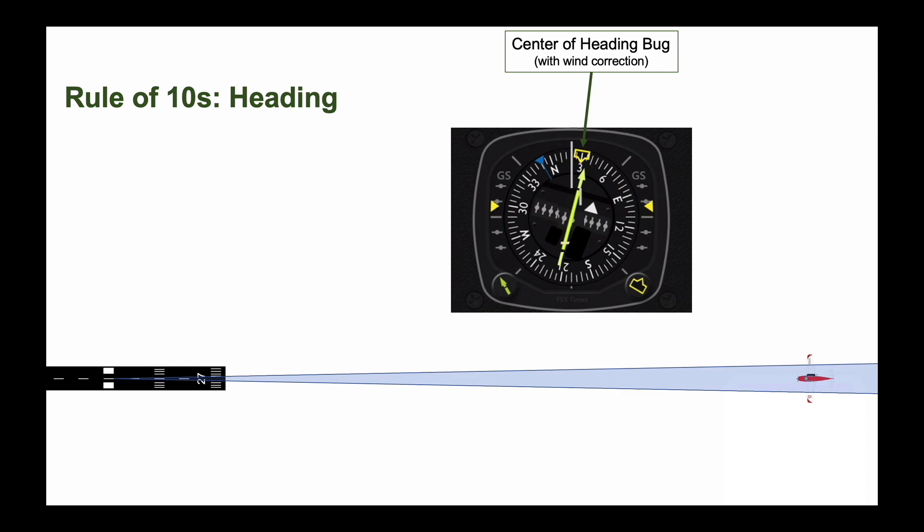If you drift to the right, you need to correct left. Without moving the heading bug, turn no farther than the heading under the left edge of the bug. Hold that heading until the course needle centers, then turn back to the heading at the center of the bug.